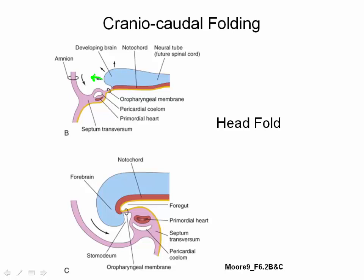Rapid growth of the cranial end of the neural tube causes the cranial region of the embryo to flex ventrally. As a result of this flexion, the oropharyngeal membrane, as well as the precardiac mesoderm, otherwise known as the primordial heart, are relocated to the ventral surface of the embryo.